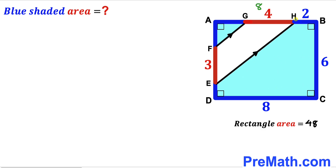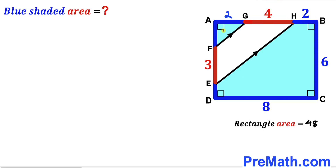We know that segment HB is 2 units and segment GH is 4 units, so the remaining segment must be 2 units as well, since the sum of all three segments must equal 8. Now we are interested in calculating the area of the blue shaded region combined.